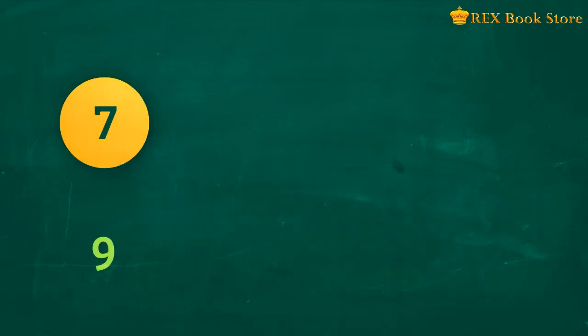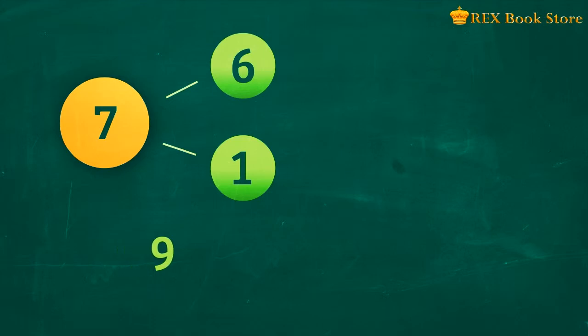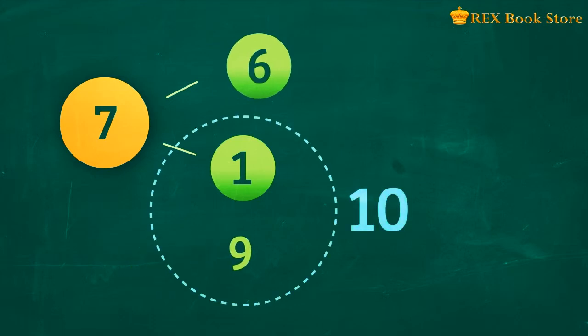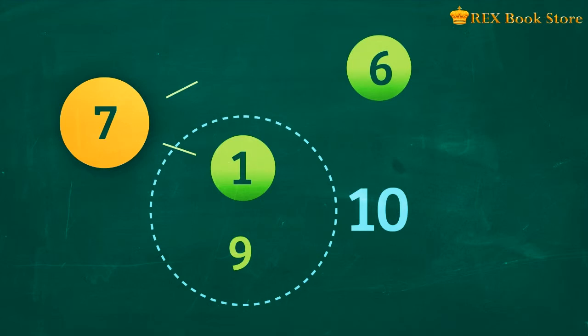How will it look like as a number bond? 7 can be represented by two parts, 1 and 6. 9 and 1 make 10, and we'll have 6 as the remaining number. 9 plus 7 is equal to 10 plus 6, which is 16.